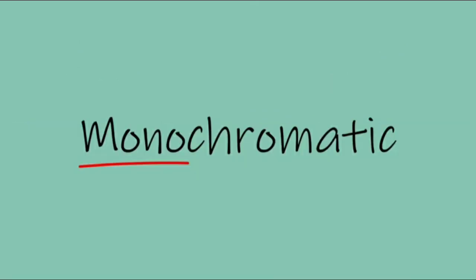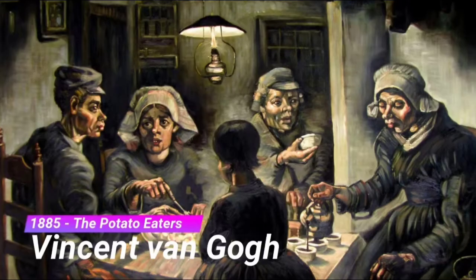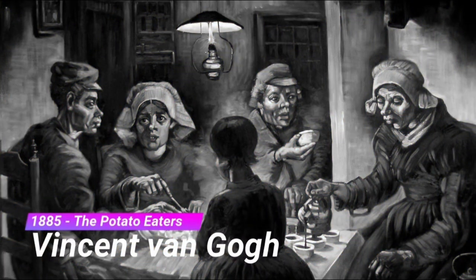When a picture uses only one color, we call it monochromatic. Mono means one, so monochrome means one color. Now let's look at some famous artworks, artists, and art movements and their use of value.